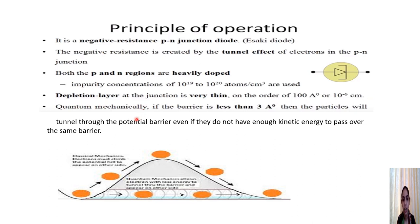For the principle of operation, we consider quantum mechanical theory. According to classical mechanics, electrons must have energy equal to or greater than the potential barrier to cross it — that is, electrons must climb the potential barrier hill to appear on the other side.